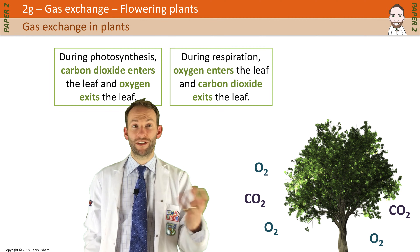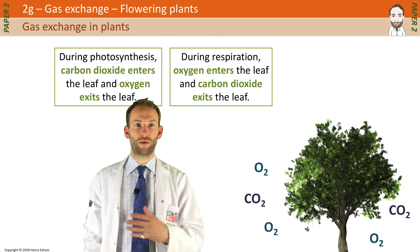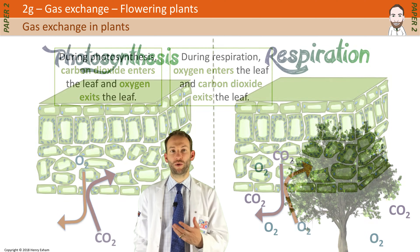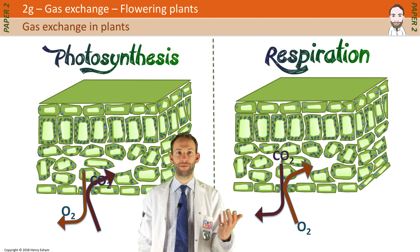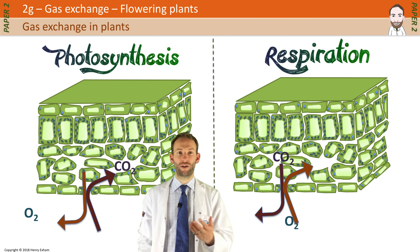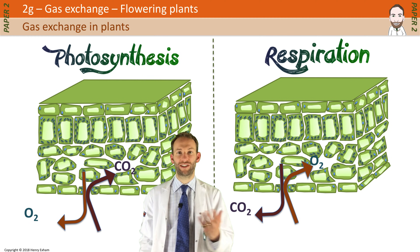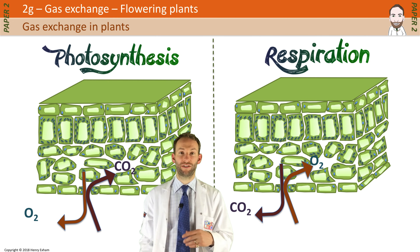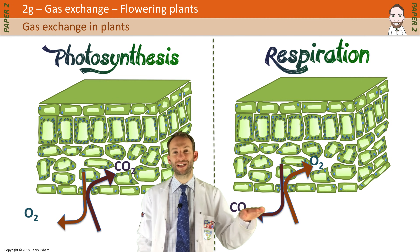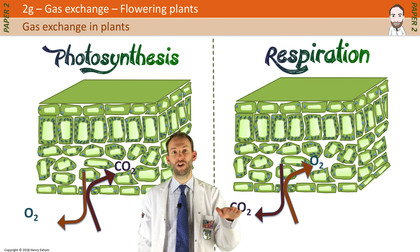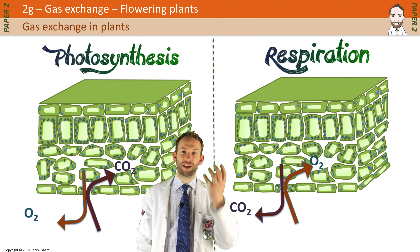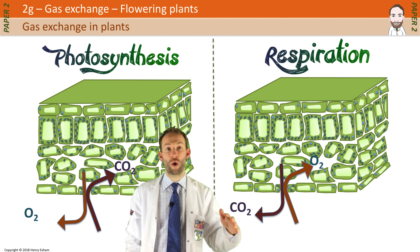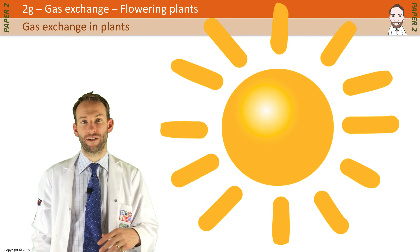Respiration and photosynthesis are equal and opposite equations, so if a plant were doing the same amount of each, there wouldn't be any net gas exchange at all. But plants actually respire 24 hours a day, at a very low level, and then when the sun is out, they do loads and loads of photosynthesis.